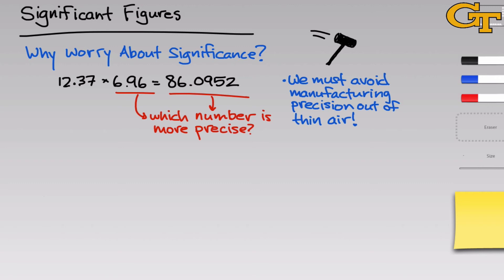In one sense, adding the extra digits after the 9 in the 86.0952 is tantamount to lying or saying that we know the 5, 2 to an extra degree of precision than we really do because the errors that are implicit in the numbers on the left—we don't know the numbers that come after 7 in 12.37 and 6 in 6.96—translate into errors in the result that are masked by the extra digits.